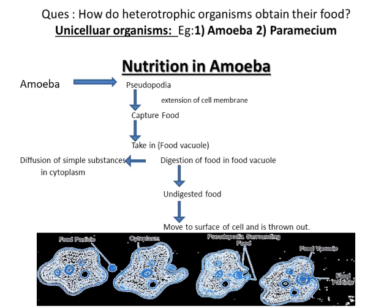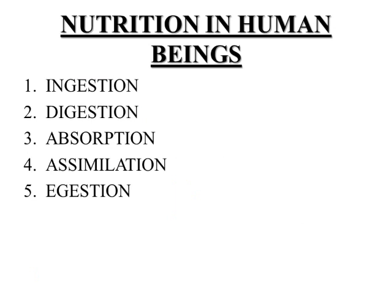Next we will study nutrition in Paramecium. The cell surface of Paramecium is covered with numerous cilia, which are hair-like structures. With the help of cilia, Paramecium captures food particles, which then enter the body through the general body surface into the food vacuole. Similar to Amoeba, digestion of food takes place inside the cell, followed by absorption, and leftover material is excreted out through the general body surface.